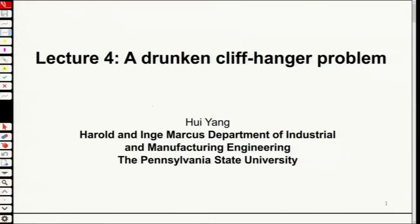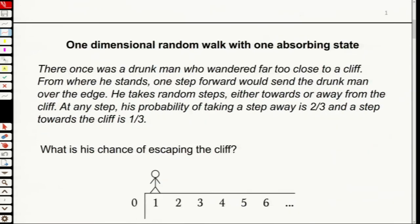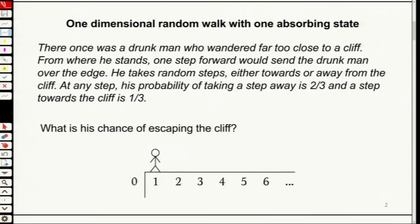What is the drunken cliffhanger problem? This has already gotten us into Markov Chains, but I just didn't present it that way — I just presented the problem to you. So you see how we formulated this problem. It's a random walk — specifically, a one-dimensional random walk with one absorbing state.